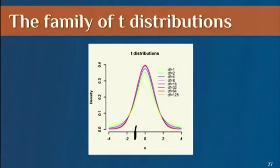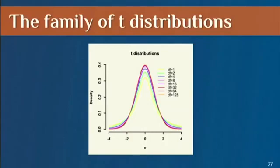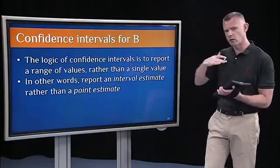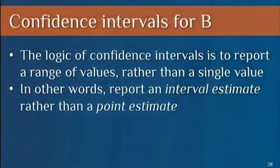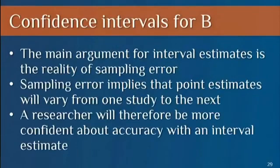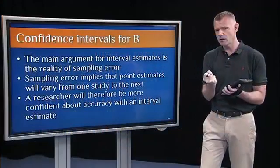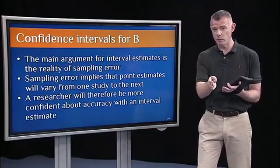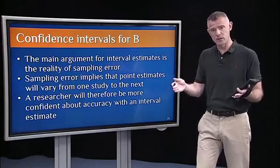If it falls somewhere not very extreme, we would say it's not significant. But if it's way out at the tails, the probability of landing there is very low under the assumption that the mean is zero, and we would reject the null. The logic here is to report a range of values rather than a single value — report an interval estimate rather than a point estimate. The argument for this is the reality of sampling error. If we have a large population and only a small sample, even if representative, we have some degree of sampling error and we have to acknowledge that by reporting the interval estimate that takes into account standard error.